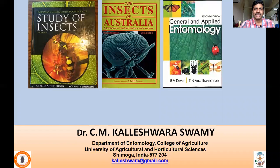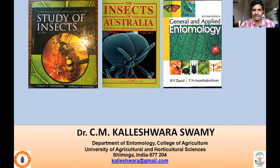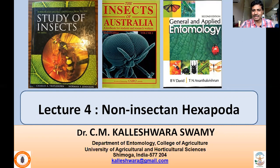The third book I used is General Applied Entomology by V. Vasanthraj David and T.N. Ananthakrishnan. So in lecture number four, I'll be covering the distinguishing features of non-insect hexapoda, which is also called Entognatha hexapoda. I'll be putting this slide in almost every class from here onwards in all these systematic structures, so that this new classification will be firmly fixed in your mind.